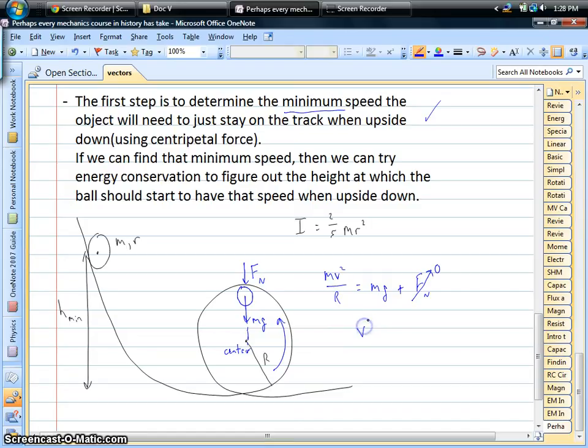So your minimum speed squared, notice that the mass is going to drop out. It's just the acceleration of gravity multiplied by the radius of the loop-de-loop.